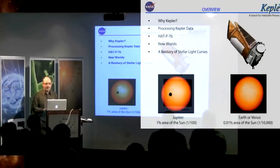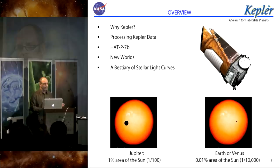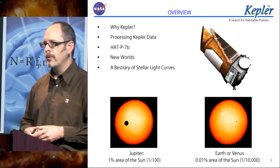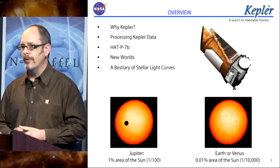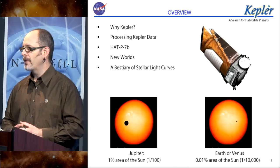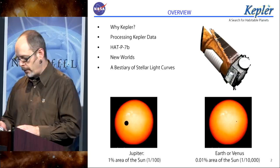Today I'll talk about some reasons why we need Kepler, and I'll focus principally on processing Kepler data — how we process the data. That's what I'm responsible for on the mission: defining the algorithms we use to crunch the data we bring down from the spacecraft to turn the pixels into planets. I'll also talk a little bit about HAT-P-7b, about the discoveries we've announced to the world of new worlds, and we'll look through a bestiary of stellar light curves that enable a whole host of astrophysical investigations, not just exoplanets.